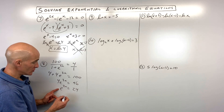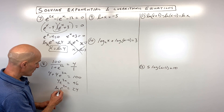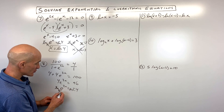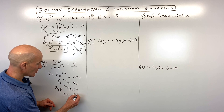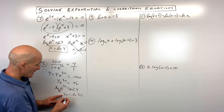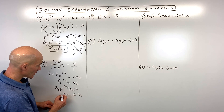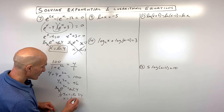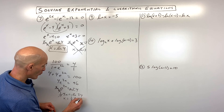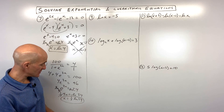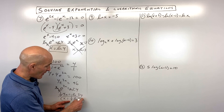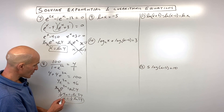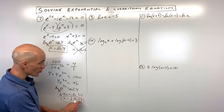Divide both sides by 3 — or multiply by one-third — to get x equals one-third natural log of 24. If you want to get fancy, you can bring up the one-third as a power using the power property of logs. Remember, one-third is like the cube root, so another option is to write this as natural log of the cube root of 24.